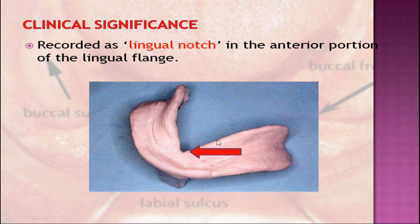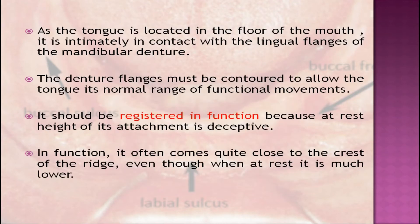As the tongue is located in the floor of the mouth, it is intimately in contact with the lingual flanges of the mandibular denture. The denture flanges must be contoured to allow the tongue its normal range of functional movements. It should be registered in function because at rest the height of its attachment is deceptive — in function it often comes quite close to the crest of the ridge, even though at rest it is much lower.